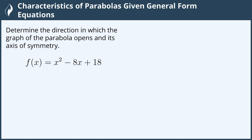To determine which direction the graph opens, we look at the coefficient in front of the x squared, or the a.